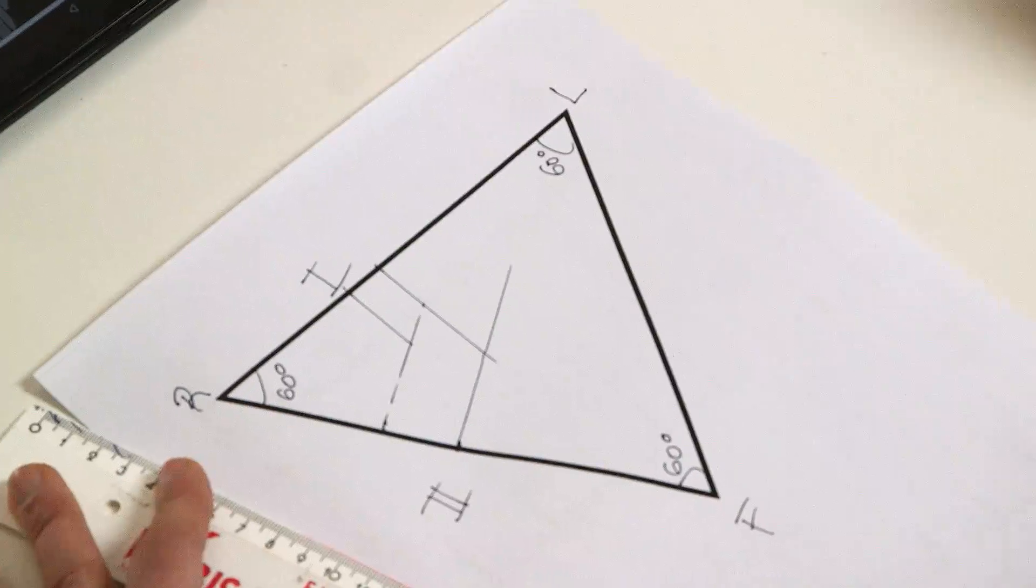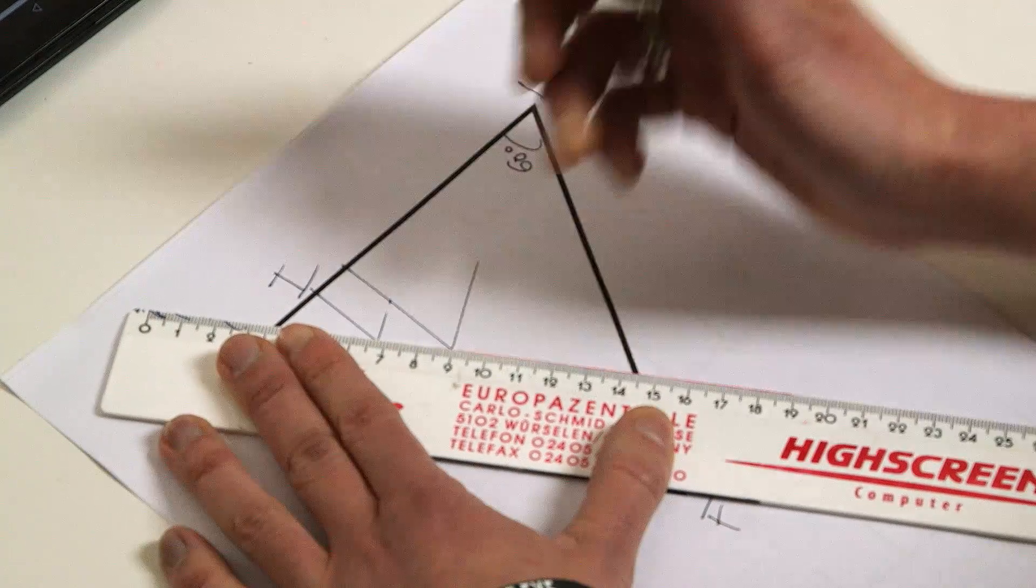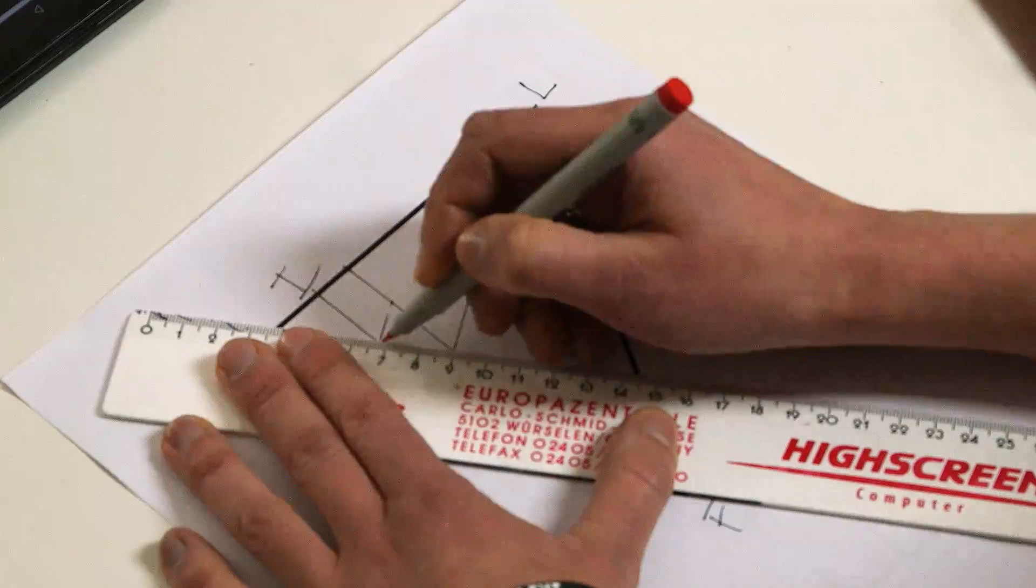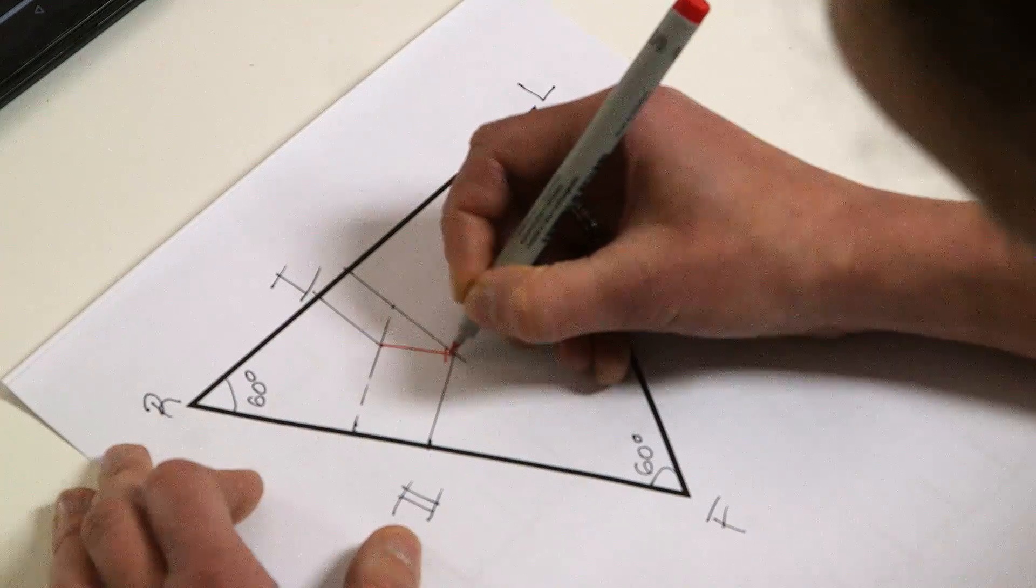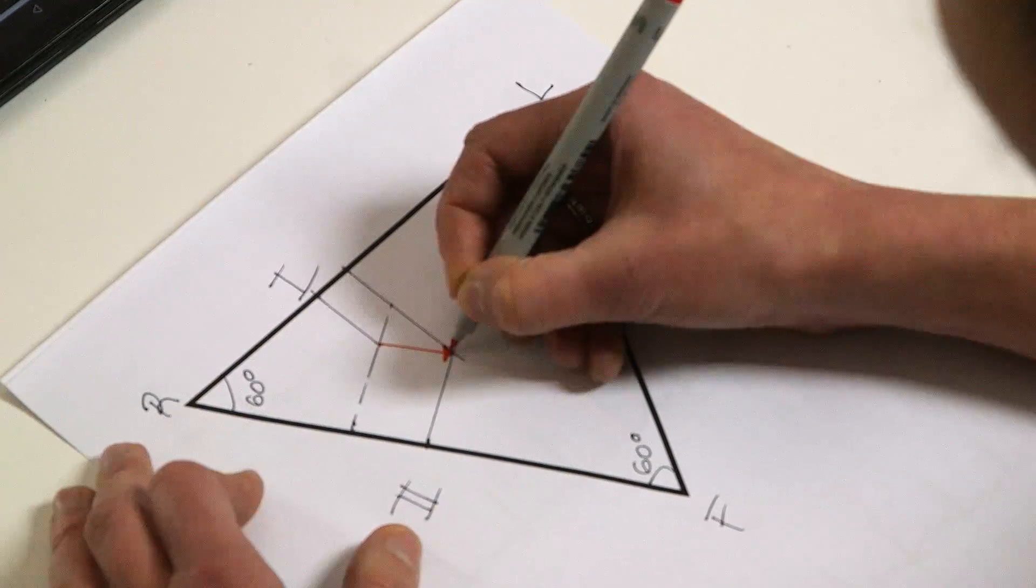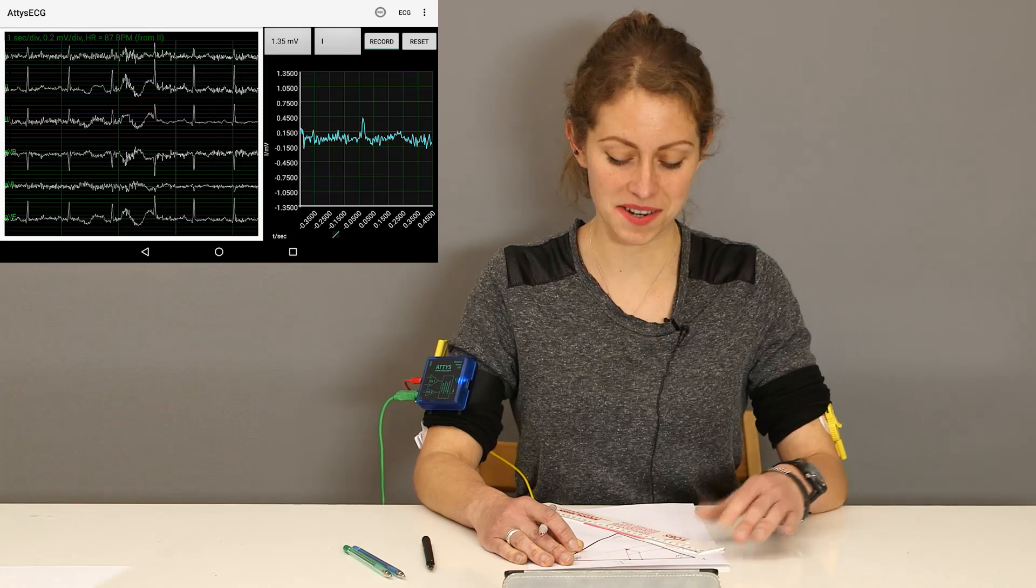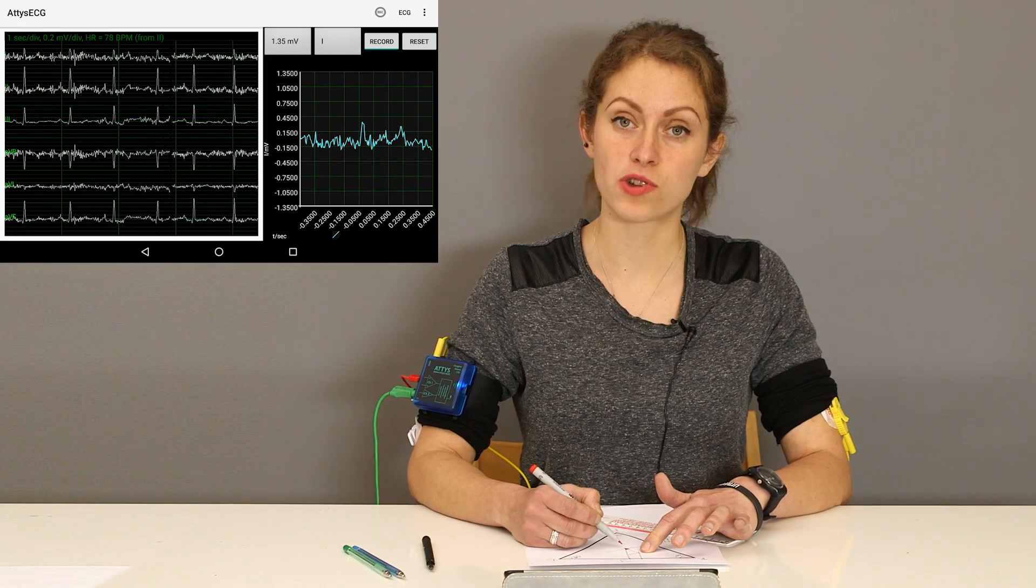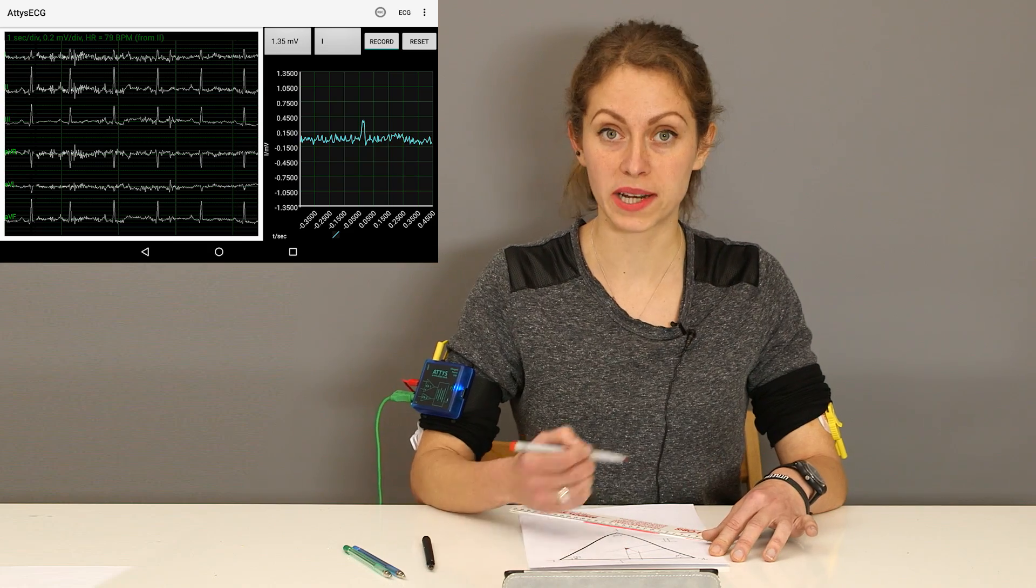So then we project these into the triangle. And there if we join the two intersecting points, what we get is our electrical heart vector. So this has been constructed from the projections of 1 and 2.